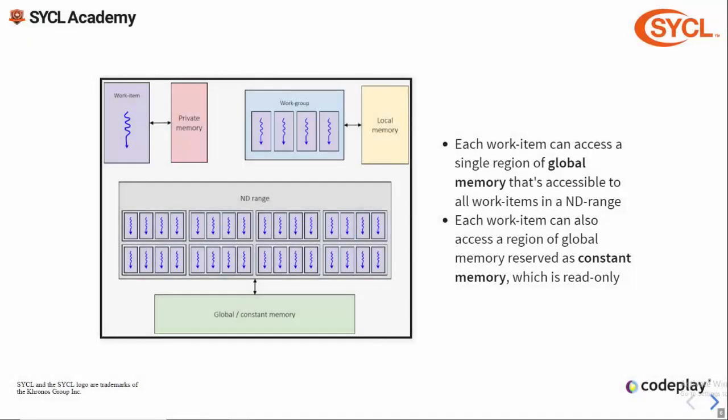Finally we had the ND range. Each work item can also access a single region of memory called global memory. Global memory is accessible to all work items in the ND range and is also the only way to communicate data in and out of kernels, except for constants. Each work item can also access a region of global memory reserved as read-only called constant memory. Using constant memory can be an optimization as it doesn't require caching since it's read-only, though not all implementations provide a benefit from this.